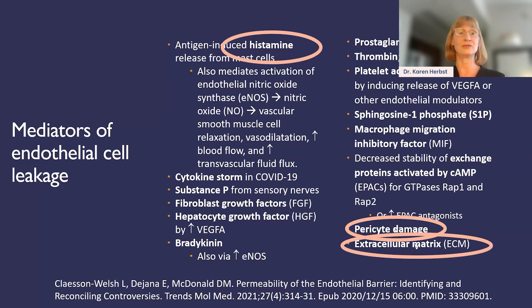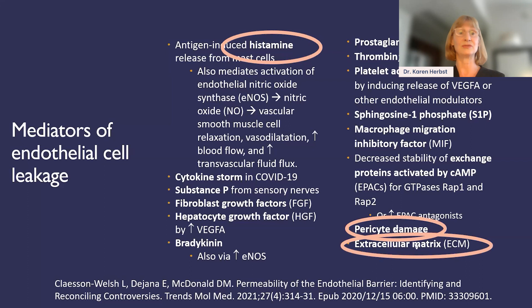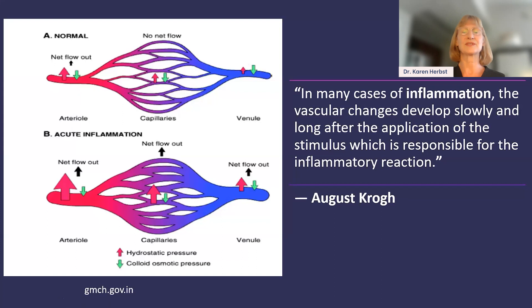When you have damage to your microvessels, normally there's a little regulated flow out into tissue, but with acute inflammation, there's a lot more. These changes develop slowly and indicate chronic inflammation. When you see problems with vessels, this is chronic inflammation — and I think we can be assured that what we're looking at in lipedema tissue is chronic inflammation. Something is being secreted, but we don't know exactly what yet.